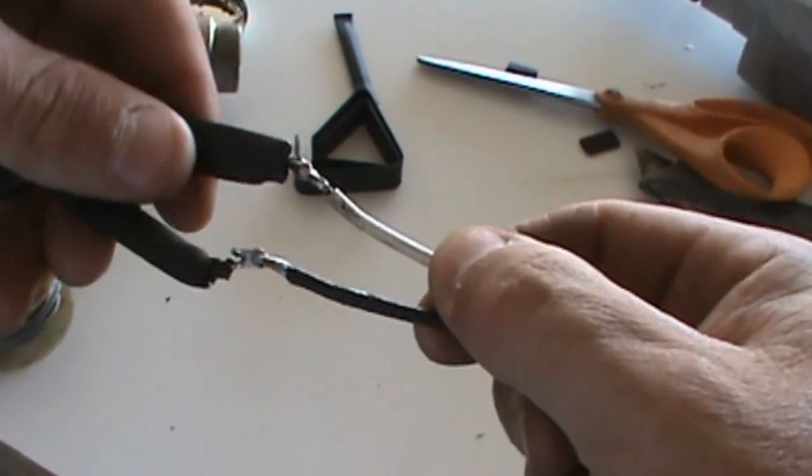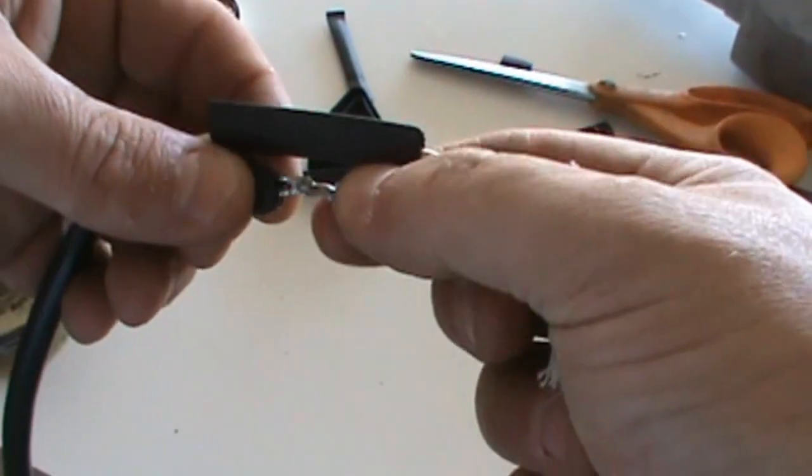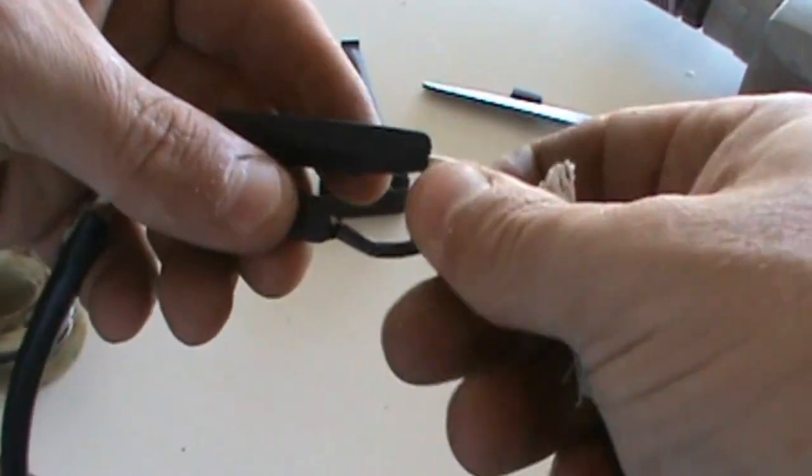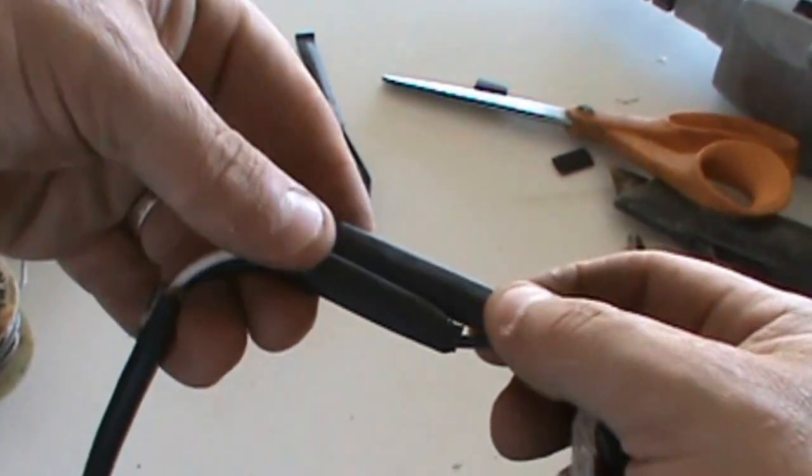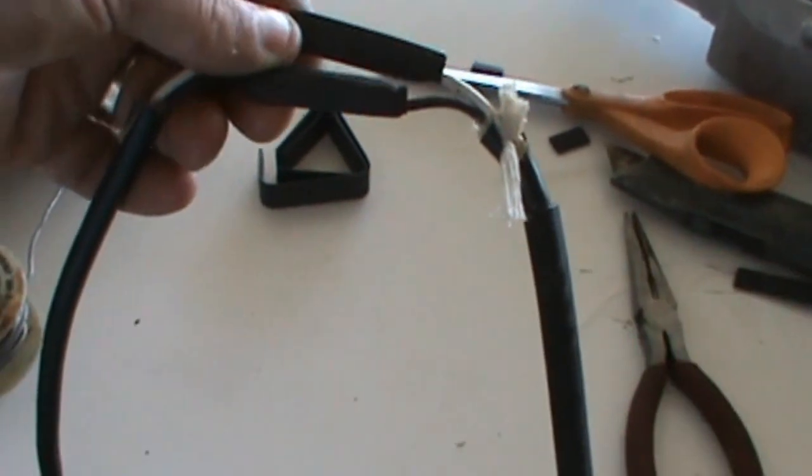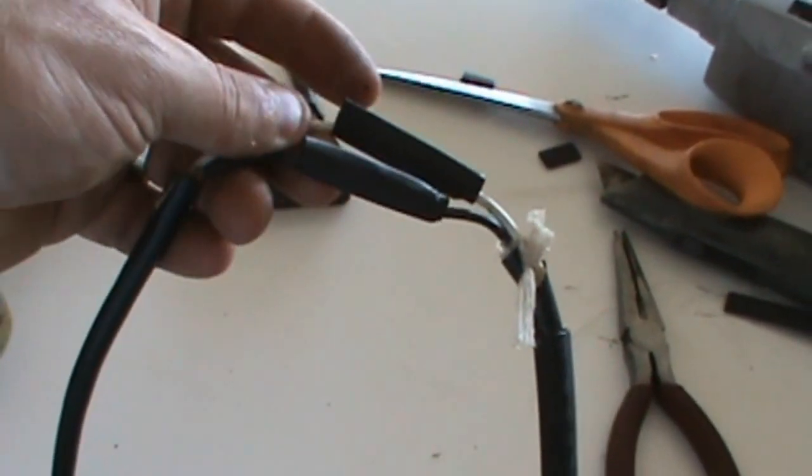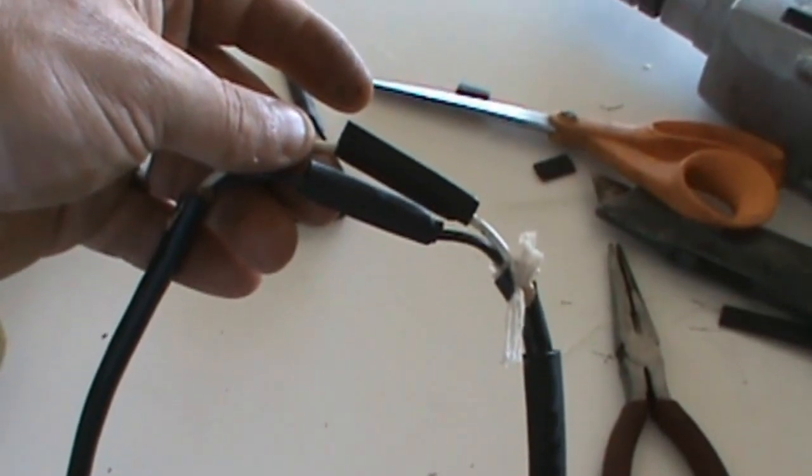Alright, so we're going to take our shrink wrap and we're just going to slide it back so it covers the exposed wires. And the whole idea of the shrink wrap here is just to keep the wires from arcing or touching together because then you'll have a short circuit. So you could use electrical tape if you didn't have shrink wrap. Next step, we're going to take our heat gun and we're going to heat this up.